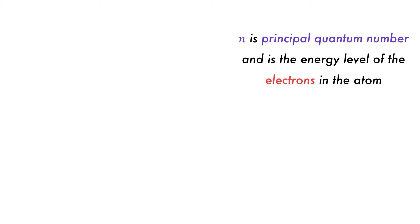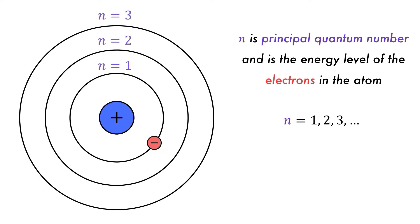The first quantum number is the principal quantum number n, which is the energy level of the electron. It can take any integer value, one or more. We saw this when we talked about the Bohr model of the atom, with larger n values being further from the nucleus. As n gets larger, the energy difference between the levels decreases.